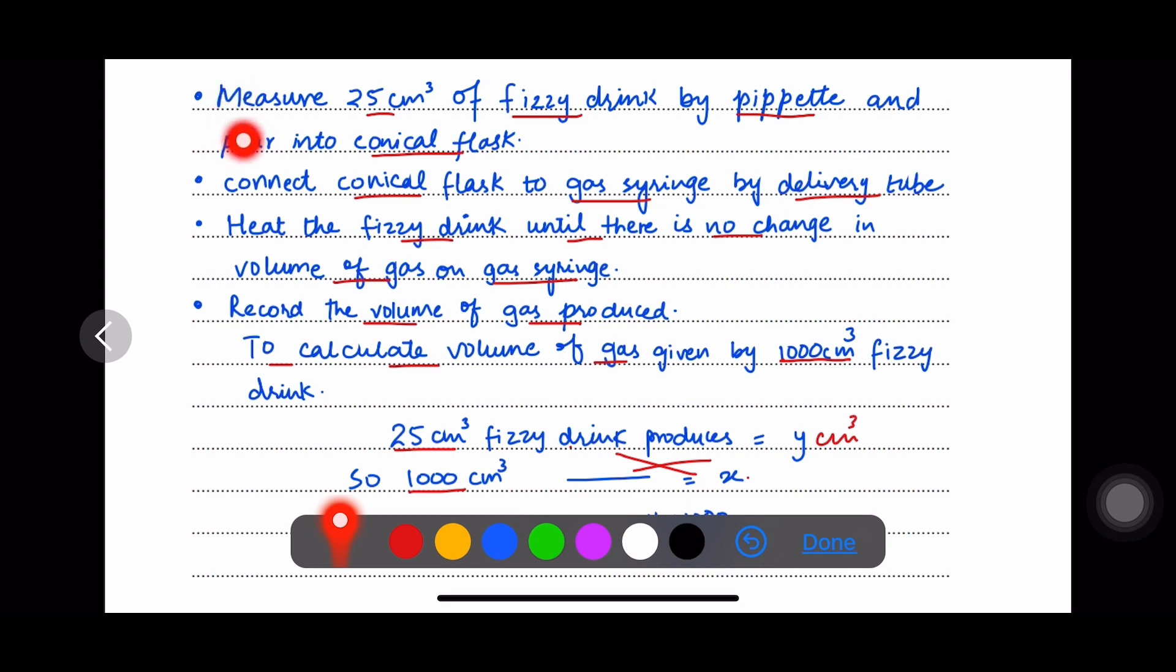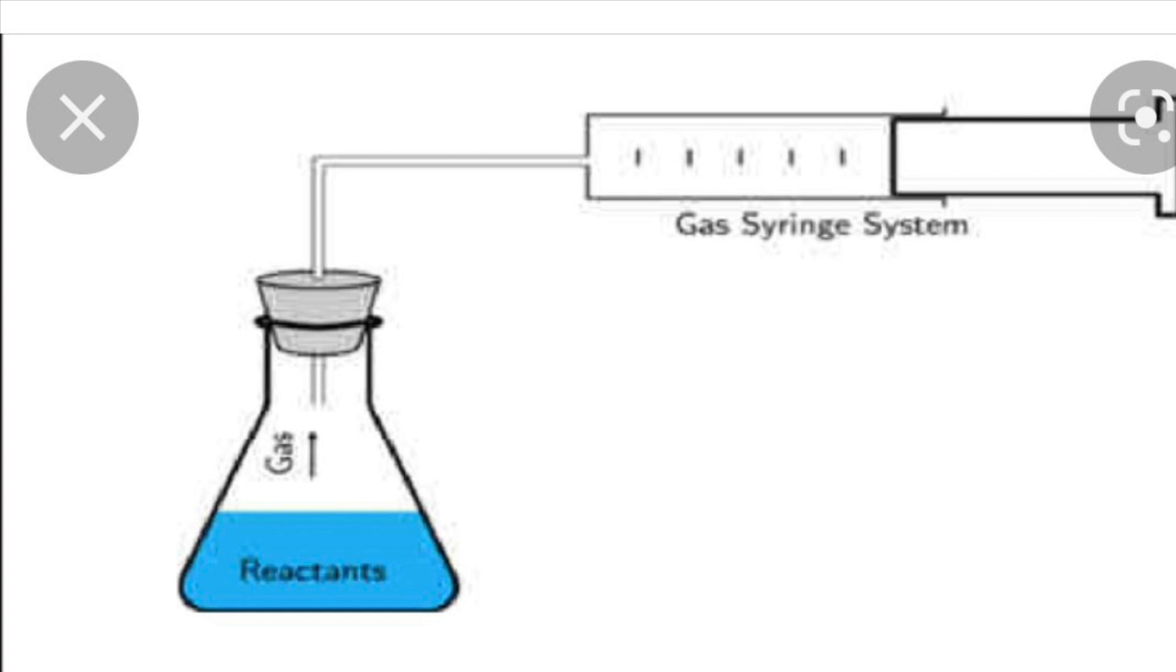Measure 25 cubic centimetres of fizzy drink by pipette and pour into conical flask. Connect the conical flask to gas syringe by delivery tube. You can also mention that close the mouth of the conical flask by rubber bung and then connect it to the gas syringe by delivery tube.